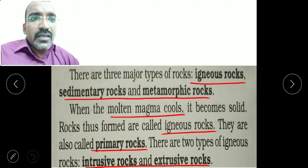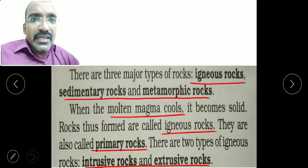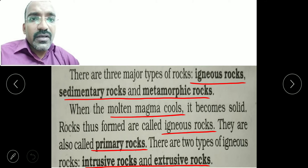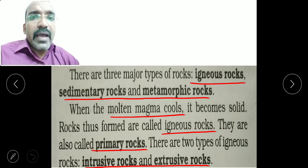There are three types of rocks: igneous rock, sedimentary rock, and metamorphic rock. Igneous rocks are formed from molten magma.